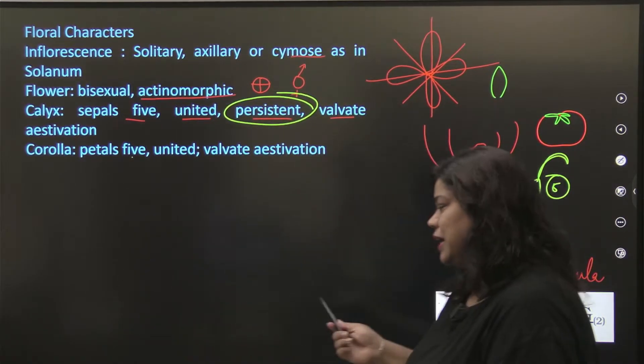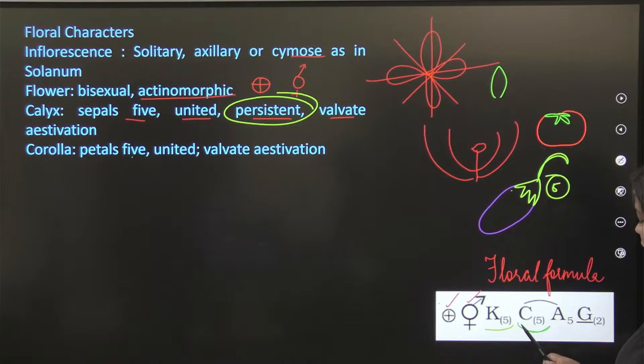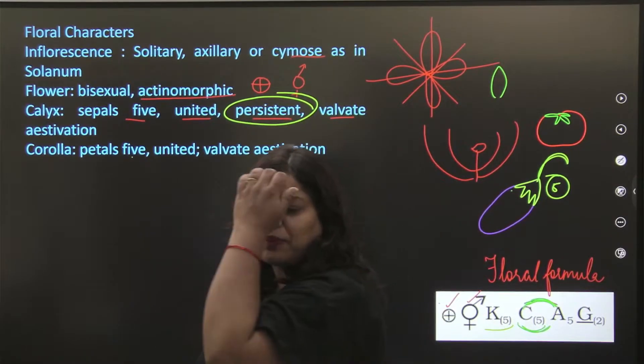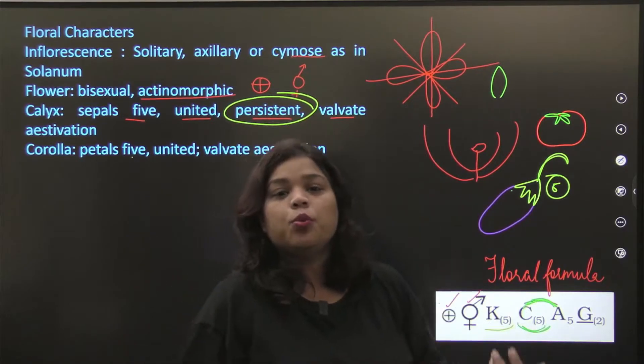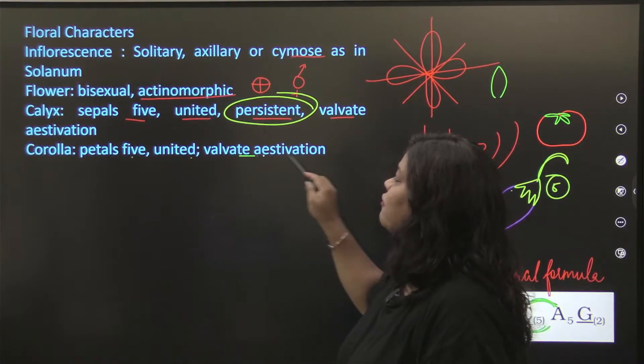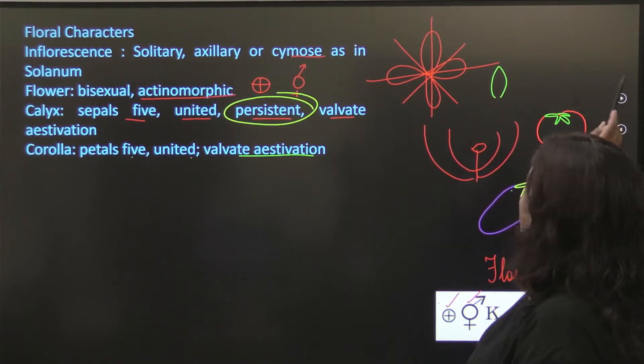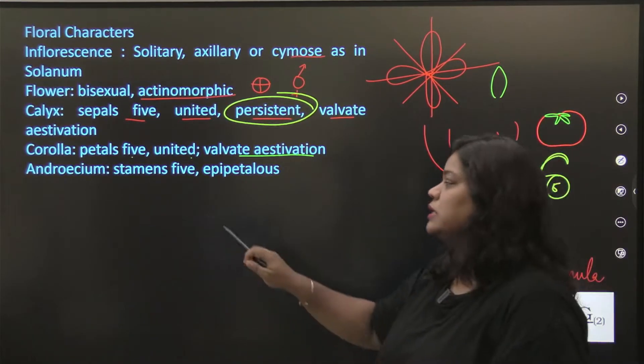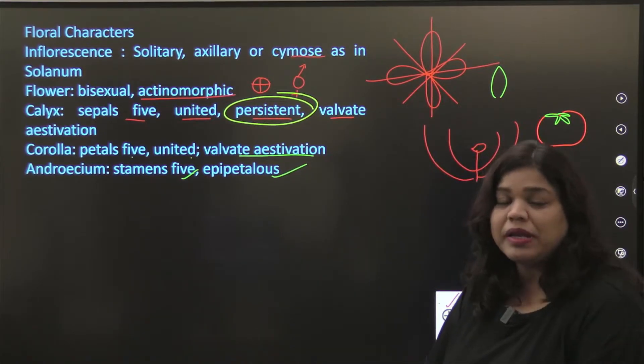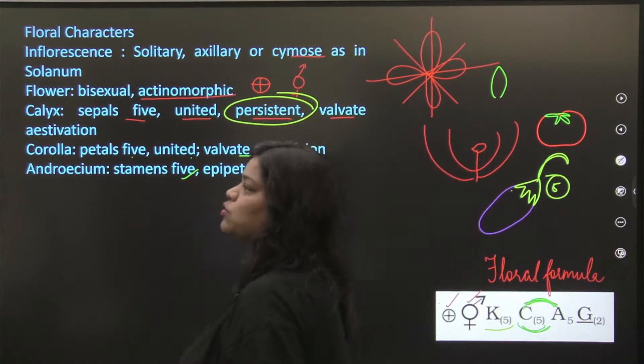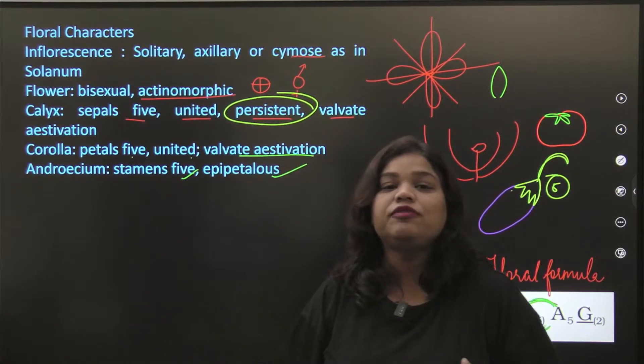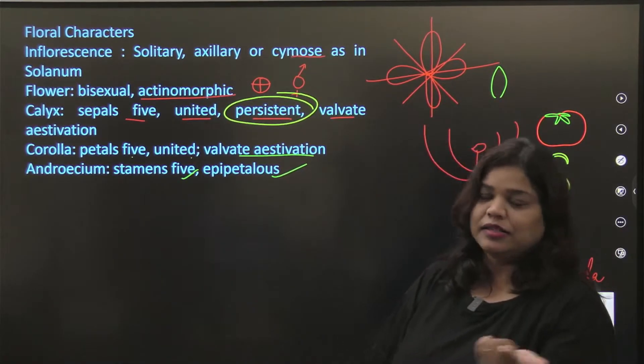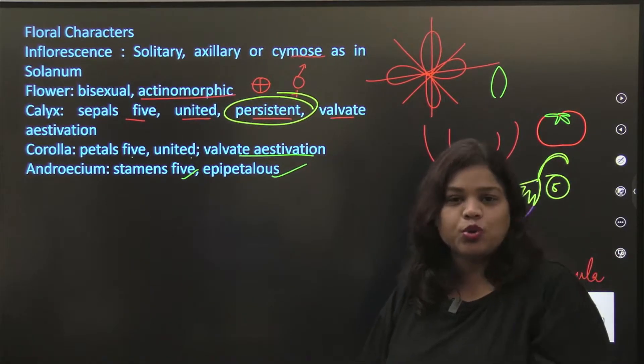Petals are five in corolla. That's why what is our C? What is it written? Five. This line is showing up. This means your corolla and your androecium, they are somehow together in the world. They are fused, joint, united. Valvate aestivation which is your androecium. Valvate androecium. Stamens are five, epipetalous. Epipetalous, I have said, when it is joint or fused with corolla, so we will call it epipetalous. With calyx we will call it episepalous. If I can remember this, you can remember this, trust me.